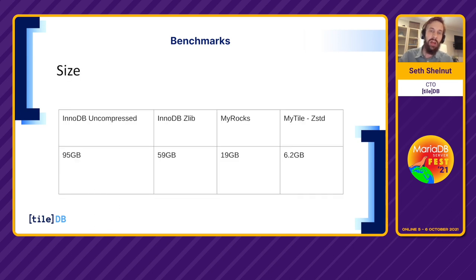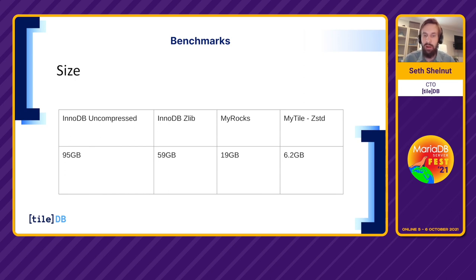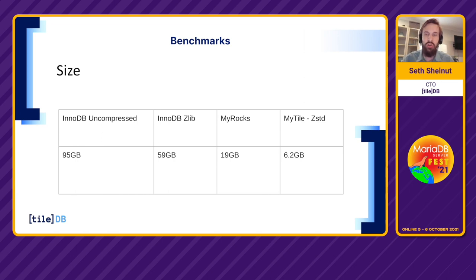First, let's look at the size of data on disk. InnoDB uncompressed comes in at about 95GB. Zlib compression for InnoDB drops it to about 59GB. MyRocks, being columnar, comes in at 19GB. And MyTile with ZSTD — our default and highly recommended compressor — comes in at 6.2GB. Huge space savings with MyTile due to our columnar compression, chunking and tiling, and ZSTD compression.